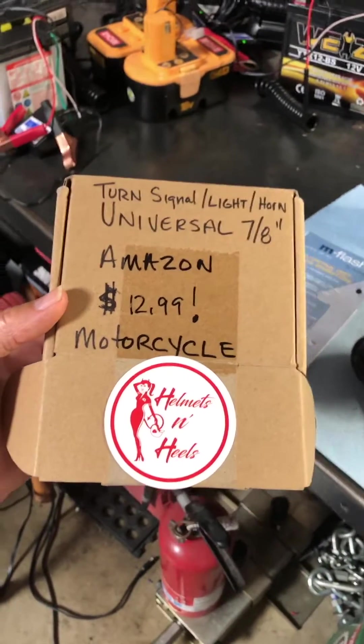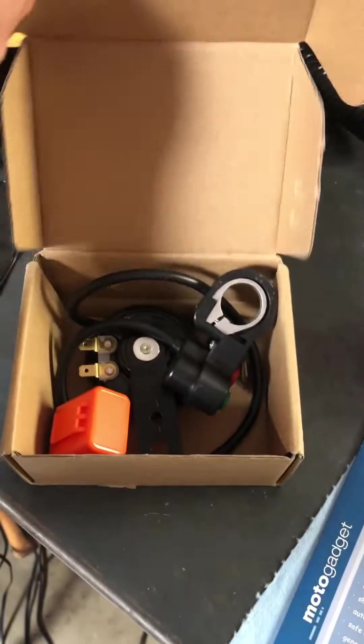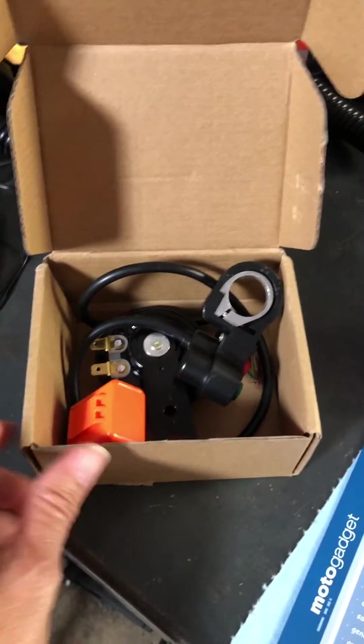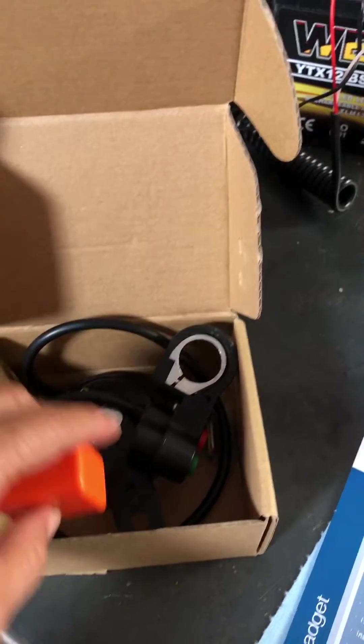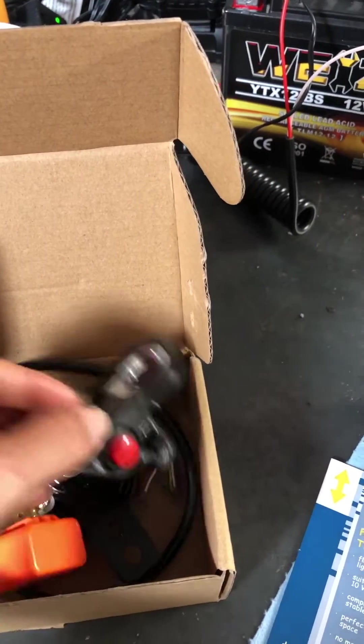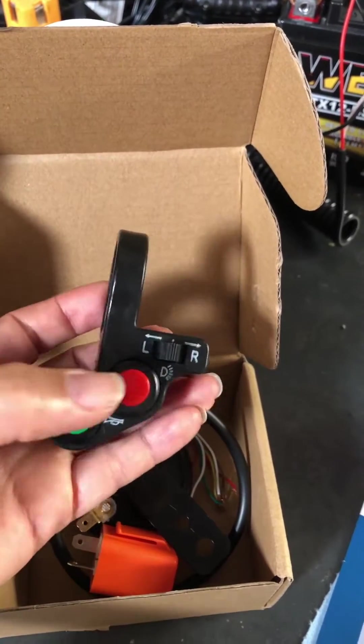Hello everyone, Wendy from Helmets and Heels with today's project, a universal motorcycle turn signal switch off of Amazon. The kit comes with three things for $12.99, pretty good deal: a 12 volt flasher, this switch with a headlight, horn, and left and right turn signal switch, and the 12 volt horn.